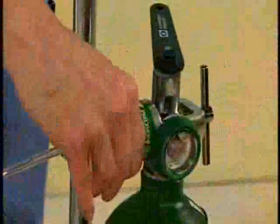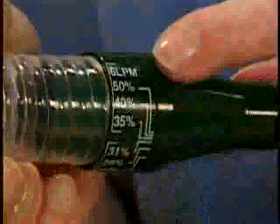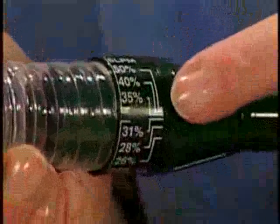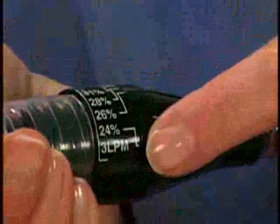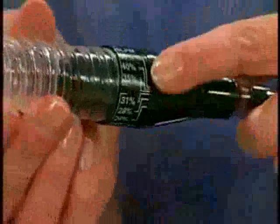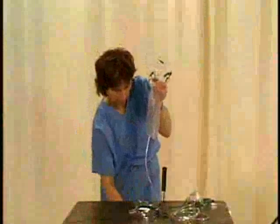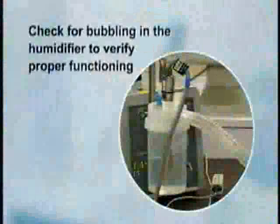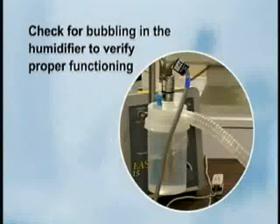Follow the same procedure, then attach the appropriately sized mask or face tent to the oxygen tubing and turn on the flow meter to the prescribed flow rate. The high-flow device will have color-coded inserts that list the flow rate necessary to obtain the desired percentage of oxygen. Allow the reservoir bag of the non-rebreathing or partial rebreathing mask to fill completely, and check for bubbling in the humidifier to verify proper functioning.